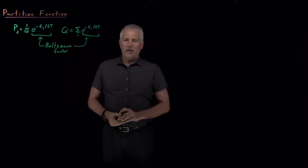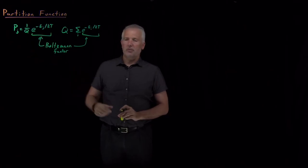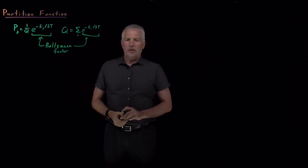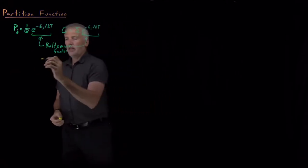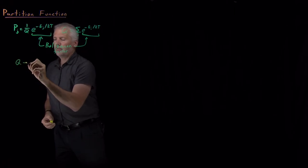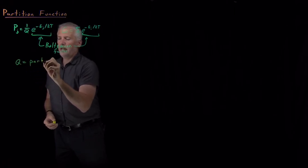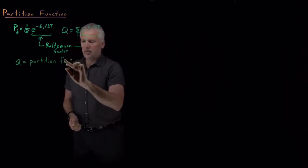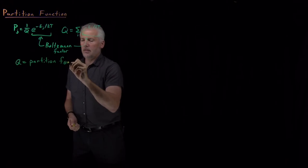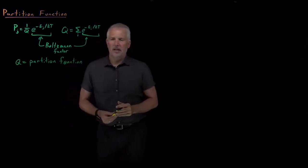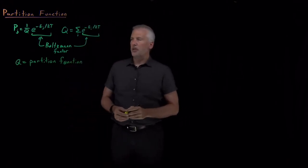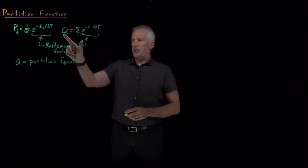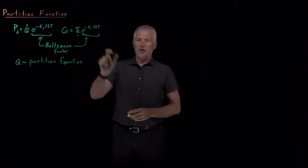This quantity q actually turns out to be very important, not just as the denominator in this expression, but also for other reasons as well. We'll spend a little bit of time talking about this quantity and give it a name. The name for this quantity q — the sum of all the Boltzmann factors — is the partition function. We call q the partition function, and its definition tells us it is the sum of all the Boltzmann factors for a system.